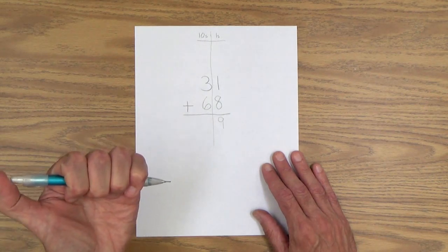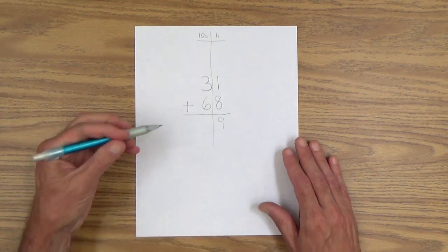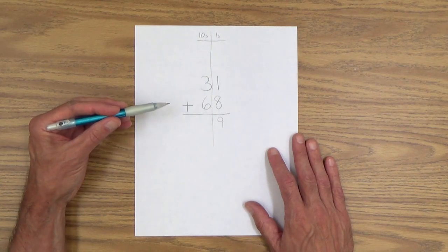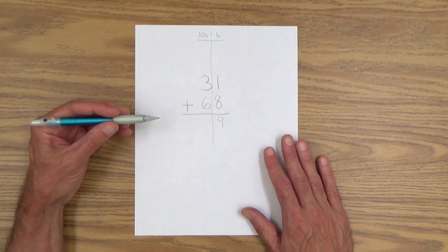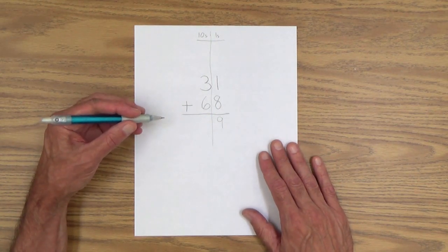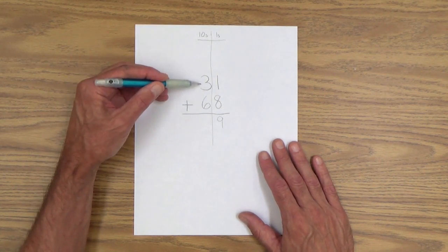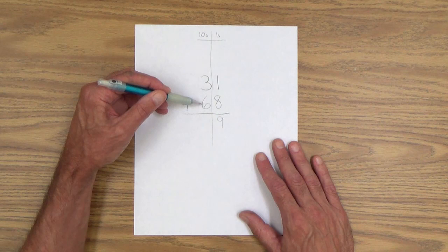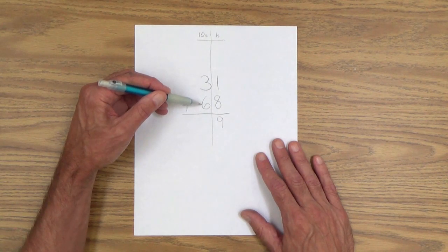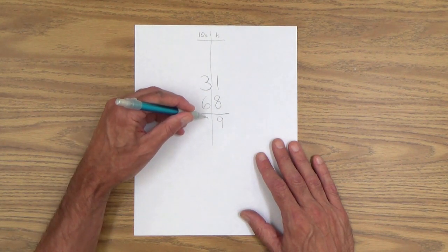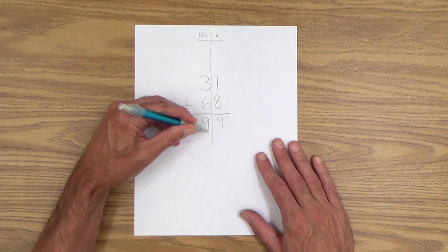And then you can say, okay, now let's work with the numbers in the tens column. Let's add those up. So we have three tens and six tens are nine tens.